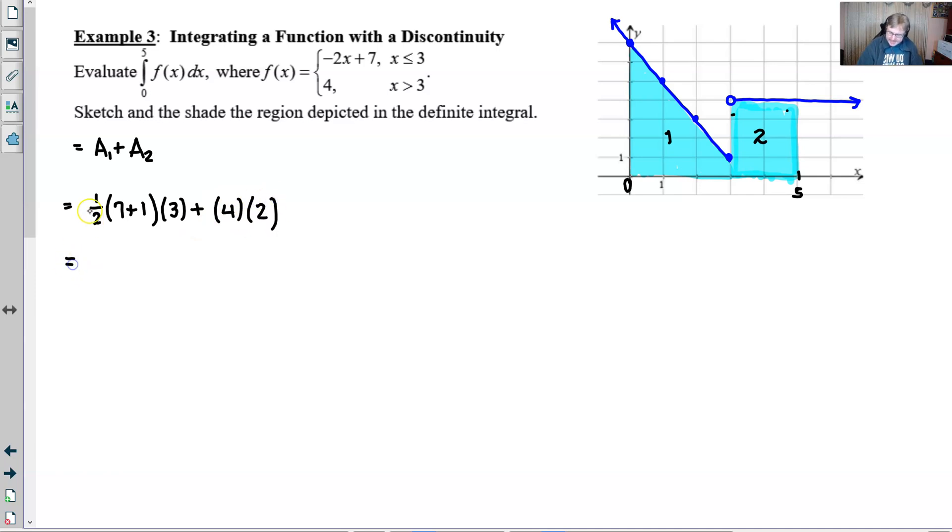And so when all is said and done, half of eight is four times three is 12, plus your eight would give you a grand total of 20. And that would be the area.